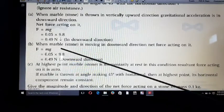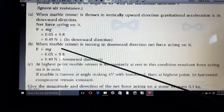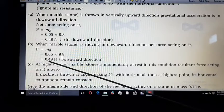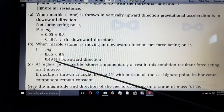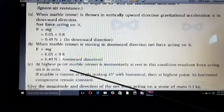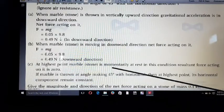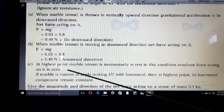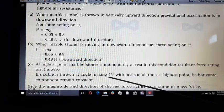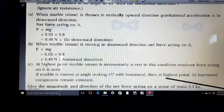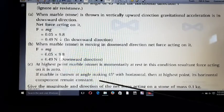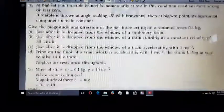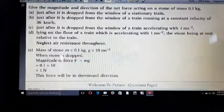Second, B: when marble is moving in downward direction, net force acting same way F = mg and same way we get 0.49 newton in downward direction. And C: at the highest point marble is momentarily at rest. In this condition, resultant force acting on it is zero. If the marble is thrown at angle marking 45° with horizontal, then at the highest point, its horizontal component remains constant.